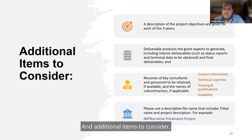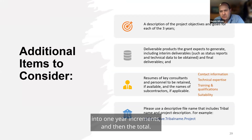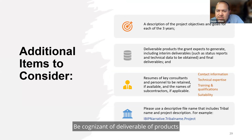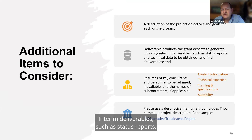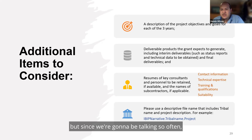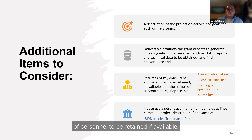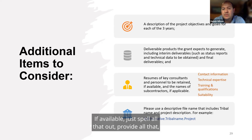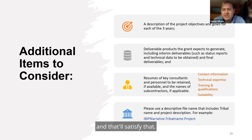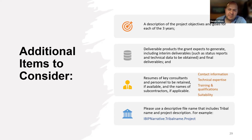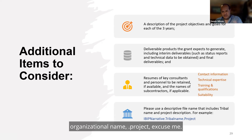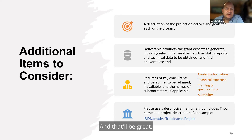Additional items to consider: a description of project objectives and goals for each of the three years broken into one-year increments; deliverable products the grant expects to generate including interim status reports, technical data, and final deliverables — those will be spelled out in the award letter; provide the resumes of key consultants and personnel to be retained if available, and names of subcontractors if available. Please use a descriptive file name — for example: IBIT narrative dot tribal name dot project name.